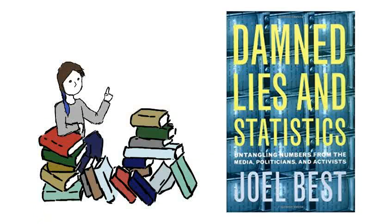Damned Lies and Statistics talks about two main ways stats can get messed up and mangled: poor information gathering, and what he calls mutant statistics. Statistics can be born bad, because the activists that want to get our attention — mostly with the best of intentions — gather information incorrectly. They collect it so as to get as few false negatives as possible, or sometimes simply guesstimate, aiming high because this is a really big problem, as far as they can see.